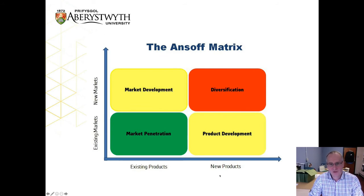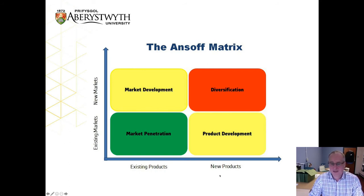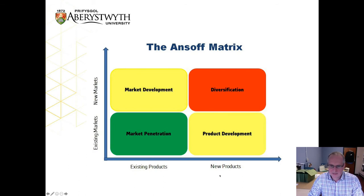An example of market development with an existing product: the Morris Oxford production line was shipped wholesale to India in the late 1950s to early 1960s, becoming the Hindustan Ambassador, which was manufactured until 2014 — well after the product reached end of lifecycle in the UK. This shows that market development using existing products is distinctly possible. For new products in existing markets, we're really looking at line and mix extensions, which we'll cover shortly.